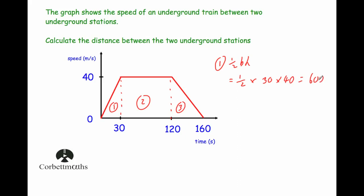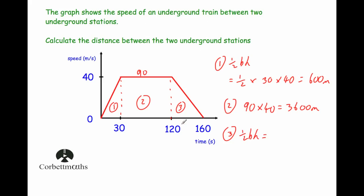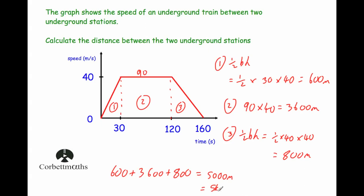Region one (triangle): half × 30 × 40 = 600 meters. Region two (rectangle): 90 × 40 = 3600 meters. Region three (triangle): half × 40 × 40 = 800 meters. Total distance: 600 + 3600 + 800 = 5000 meters, or 5 kilometers.